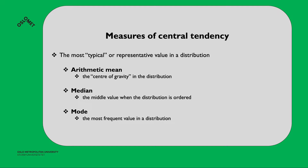We'll first talk about the arithmetic mean, which is the center of gravity in a distribution. Then the median, which is the middle value in a distribution ordered from lowest to highest. And finally the mode, which is the most frequent value in the distribution.